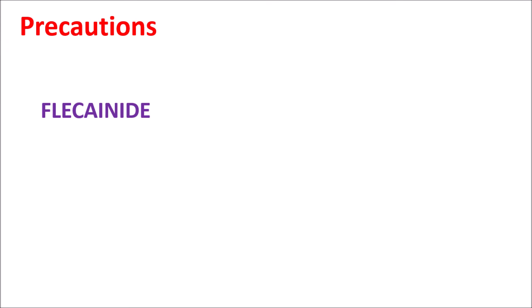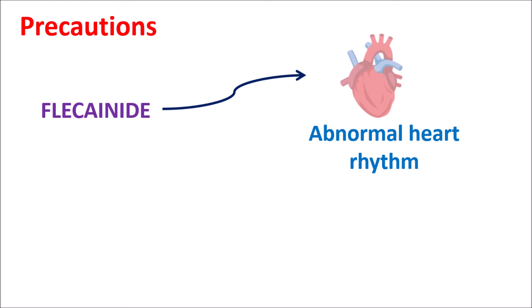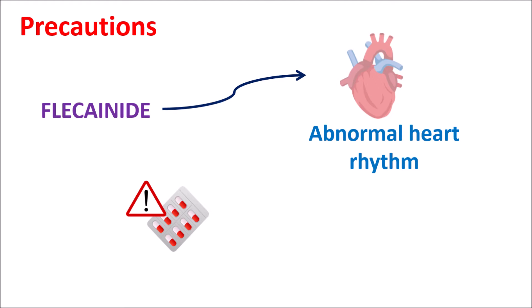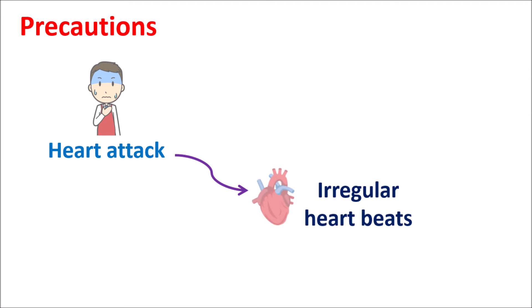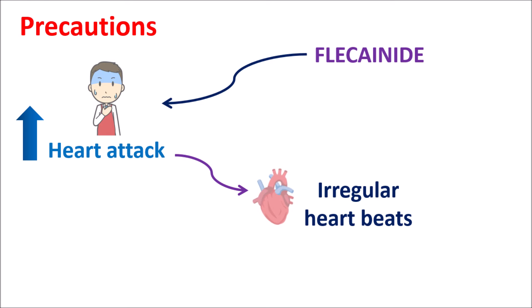Now let us see the precautions of Flecainide. One important precaution is that this drug can produce some abnormal heart rhythm — so even though Flecainide can reduce irregular heartbeats, it can also produce some abnormal heart rhythm and should be carefully used only in conditions like paroxysmal supraventricular tachycardia. In people with any previous history of heart attack, Flecainide should be carefully used because it can increase the risk by producing abnormal heart rhythm. That is why this drug is not preferred in people with a previous history of heart attack.